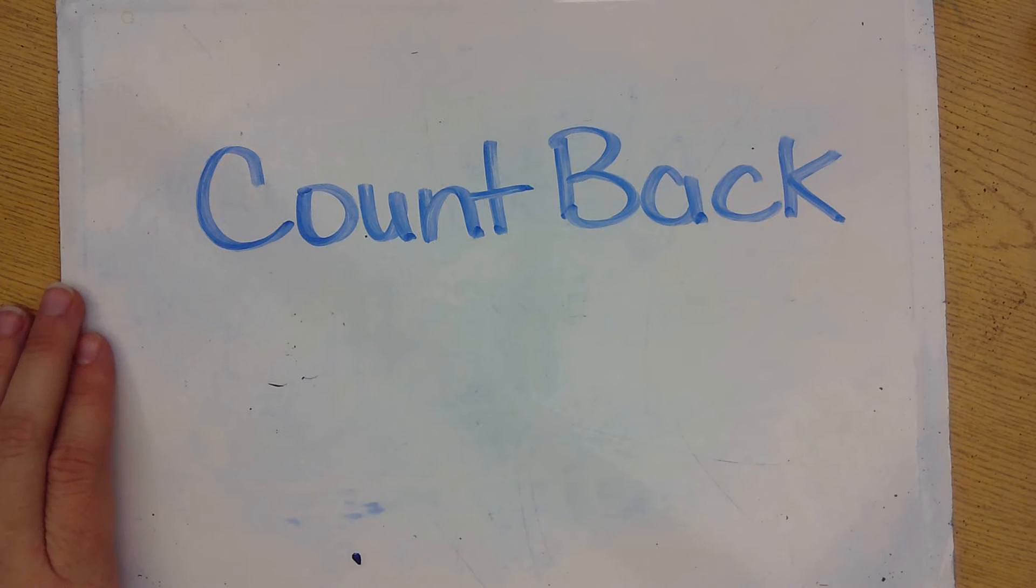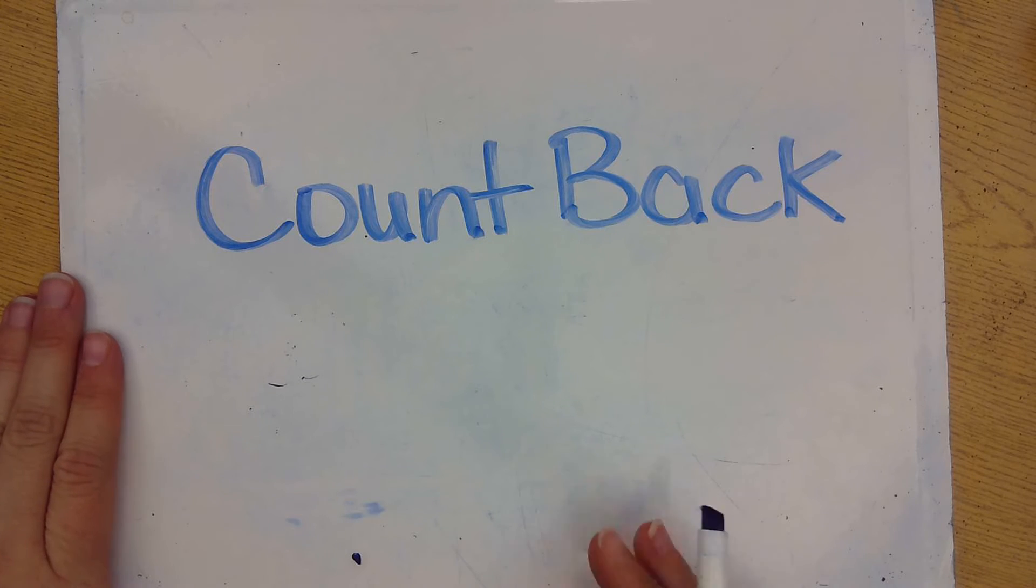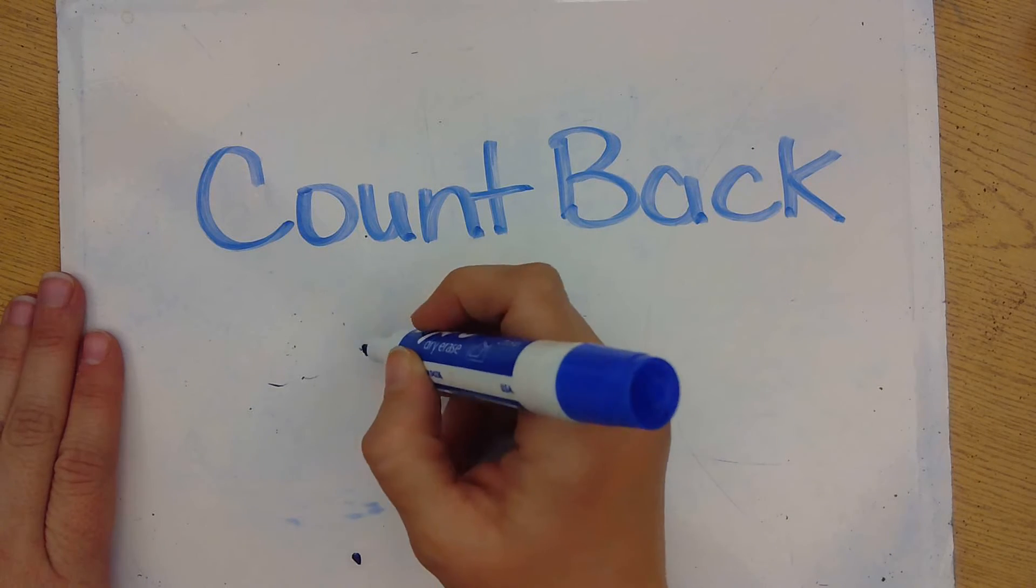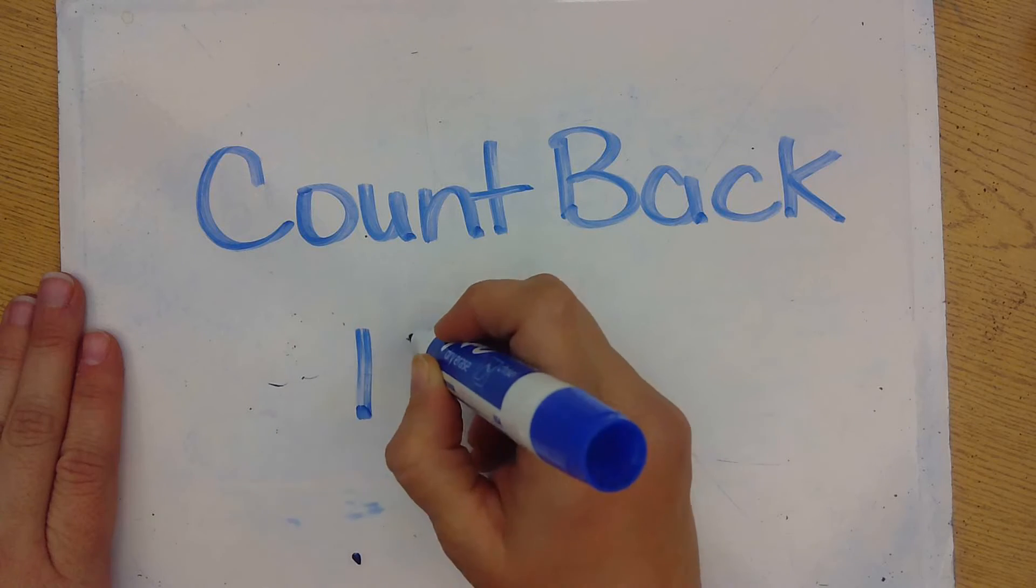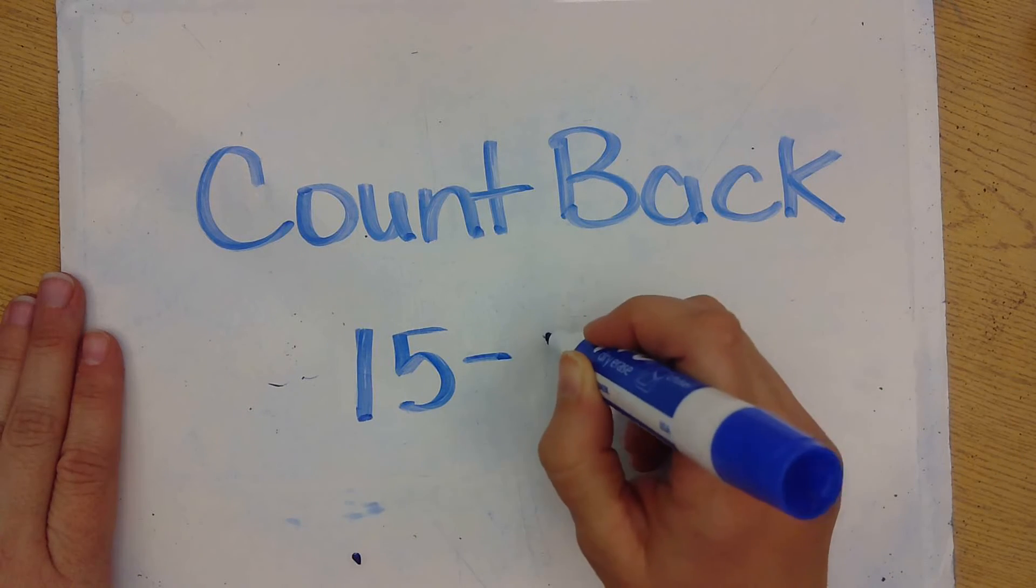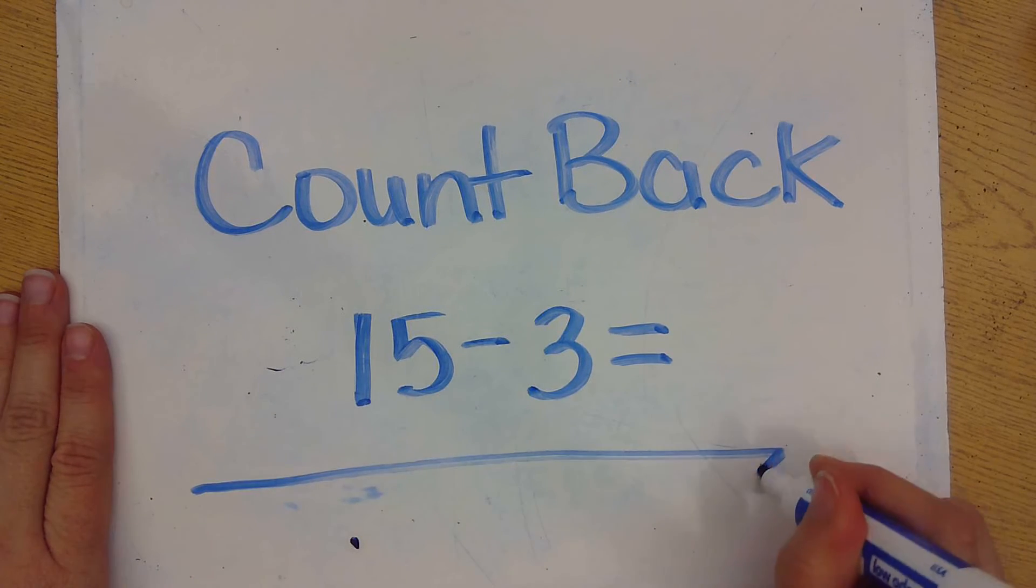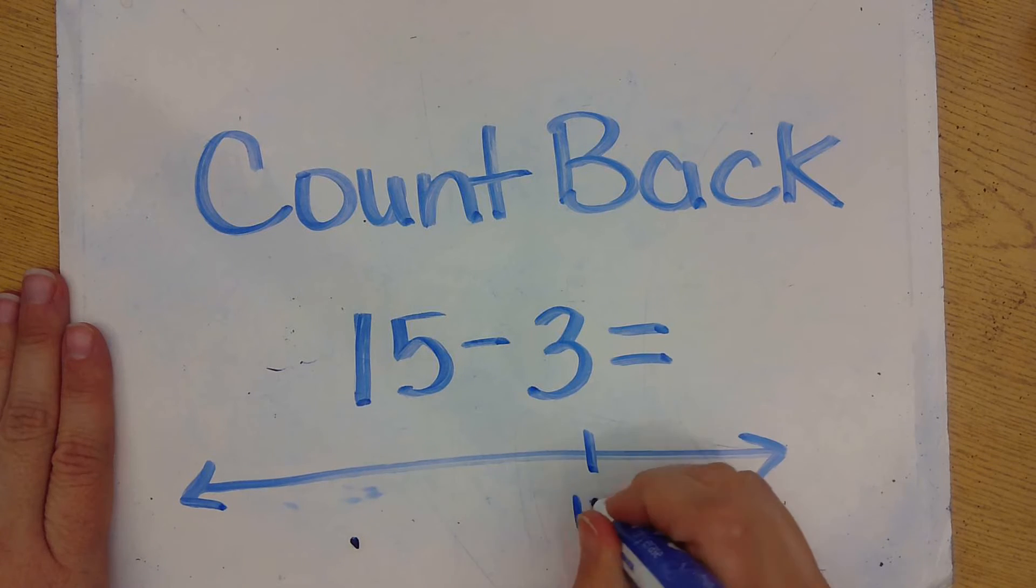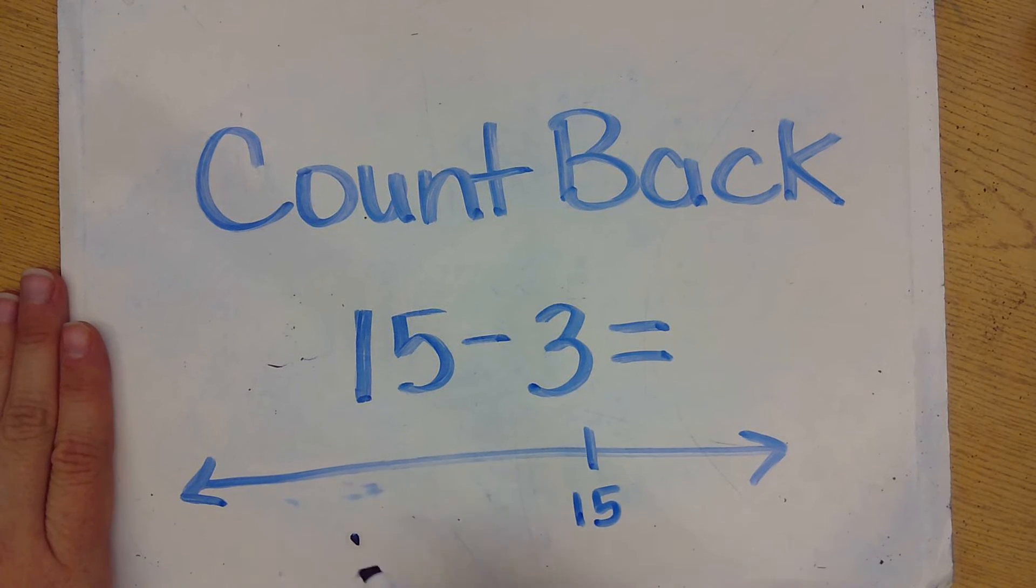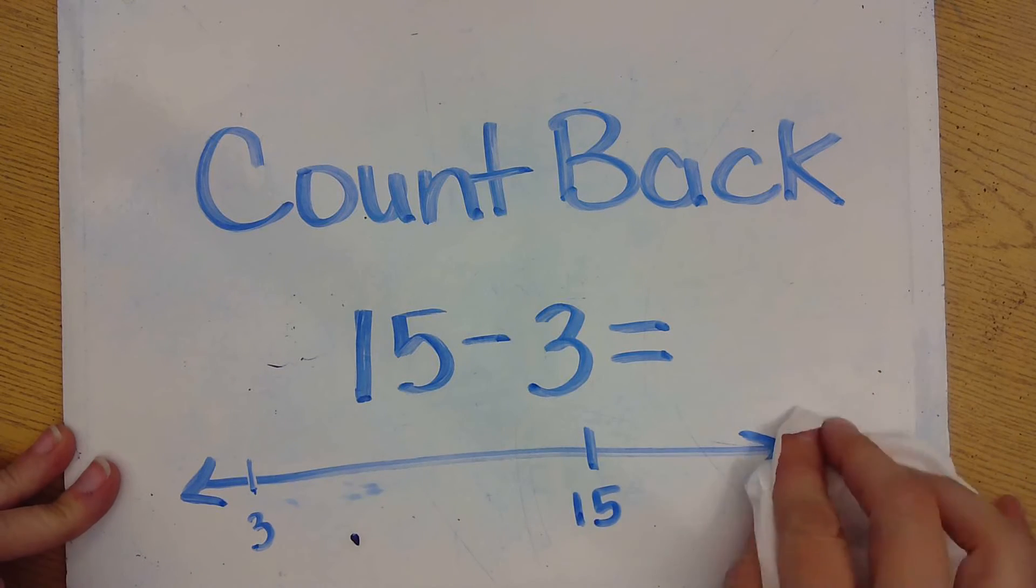Another subtraction strategy that we use quite a bit is the counting back strategy. We want to use the counting back strategy when we have two numbers that are being subtracted, but the numbers are very far apart on a number line. If I had a number line here and 15 was about right here, 3 would be down here somewhere. So when we use the counting back strategy, the numbers on a number line are usually pretty far apart.